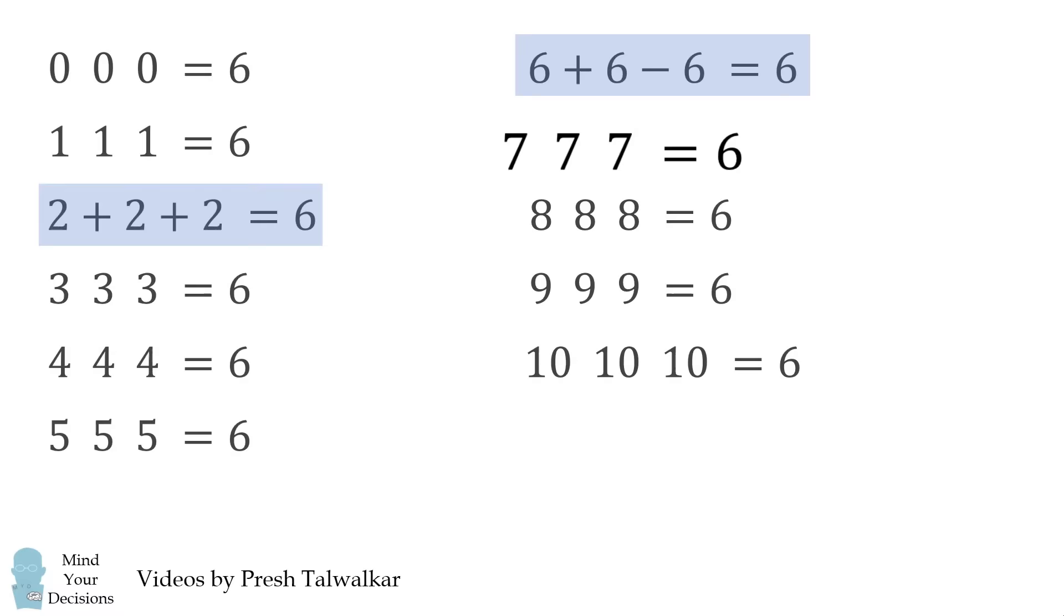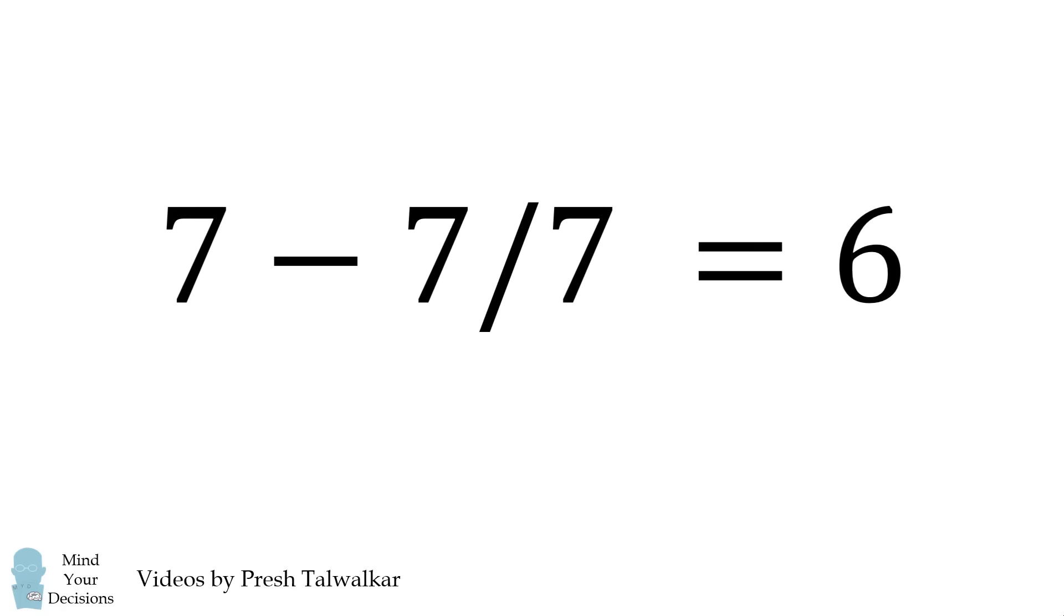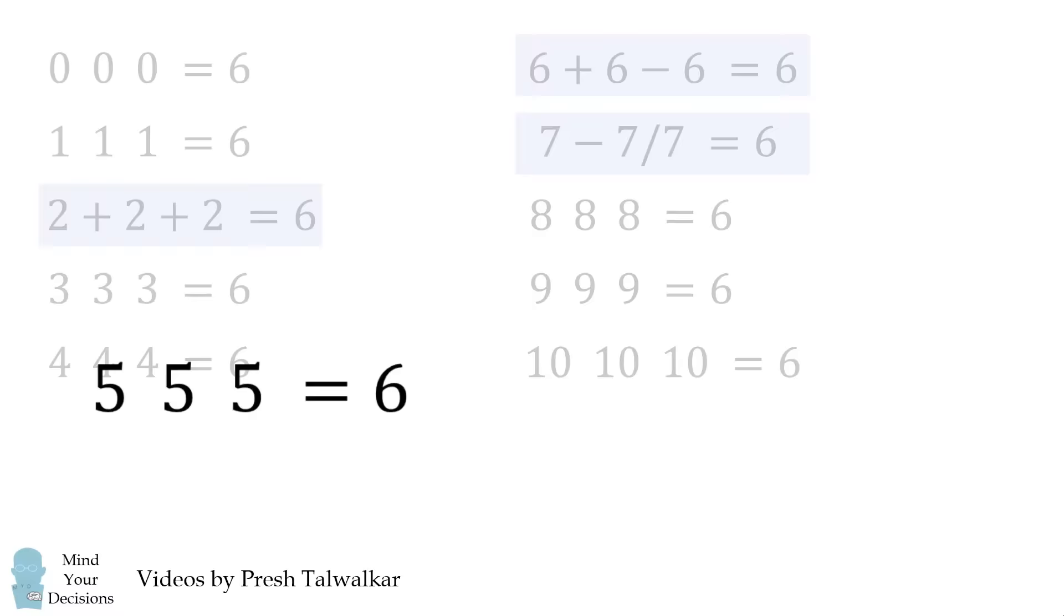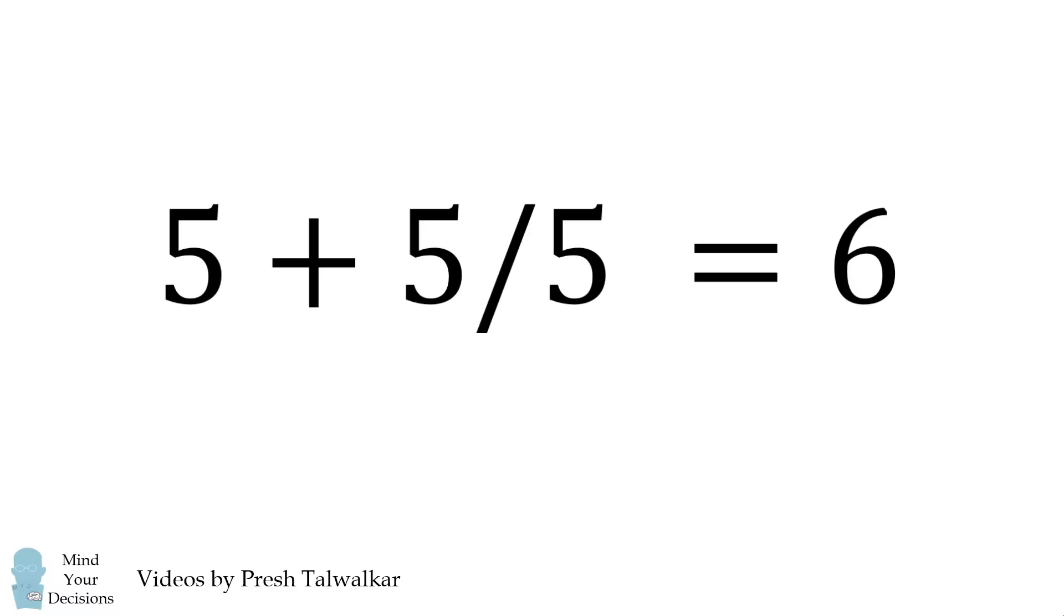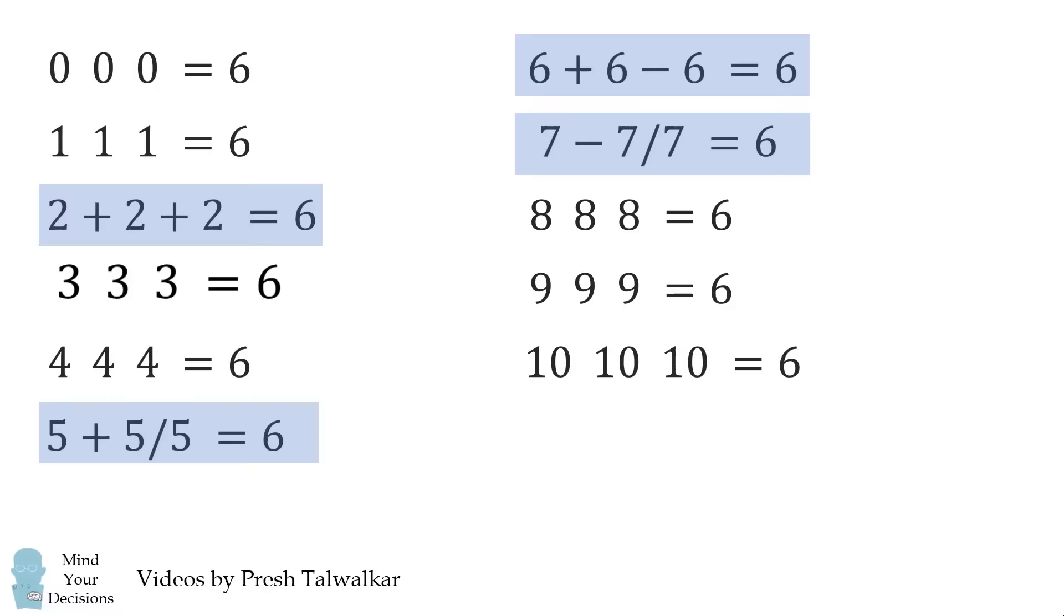Now, let's solve 7 7 7 equals 6. We can do this as 7 minus 7 over 7 is equal to 6. We get a very similar solution for 5 5 5. We can take 5 plus 5 over 5 is equal to 6. So, we're making good progress.